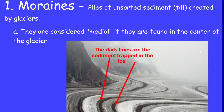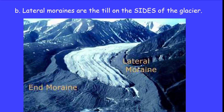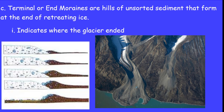When glaciers move through, they deposit things called moraines — just a dump of material. Depending on where they are in the valley, they have different names. Medial moraines are deposited in the middle of the valley. Lateral moraines are deposited on the sides of the valley. An end moraine is deposited at the end of the glacier. You can see medial and lateral moraines in the diagram here.